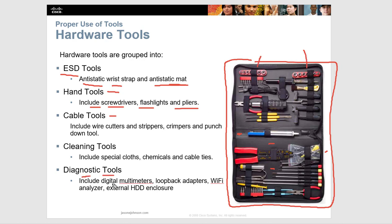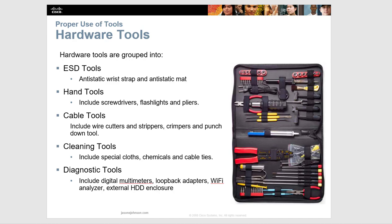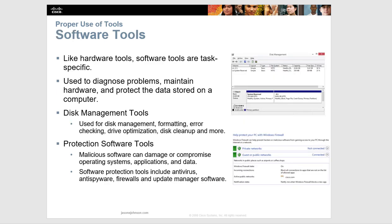Other diagnostic tools include a multimeter, loopback adapter, Wi-Fi analyzer, or an external hard drive enclosure to pull information from a drive. On the software side, tools are specific to the operating system and are used to diagnose problems, maintain hardware, and protect data. They can include disk management, drive optimization, and disk cleanup. These will differ depending on whether you're using Windows, Linux, or Apple.